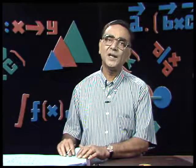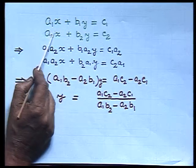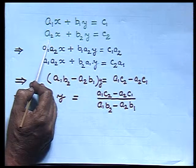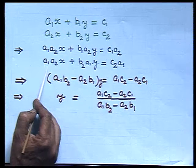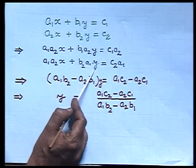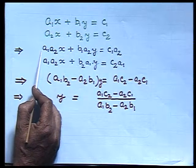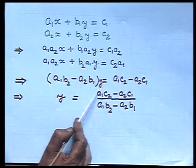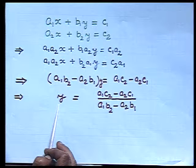To get the value of y, I make the coefficients of x equal. Multiplying the first equation by a₂ and the second by a₁, then subtracting, gives (a₁b₂ minus a₂b₁)y equals a₁c₂ minus a₂c₁, giving y as (a₁c₂ minus a₂c₁) divided by (a₁b₂ minus a₂b₁). Can we have a more convenient way of writing this? Yes.